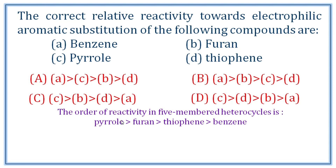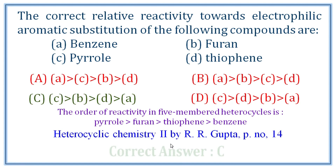The reason pyrrole is highly reactive is due to the electron density and the electron-donating ability of nitrogen — this is the trivalent nitrogen's electron-donating ability. Furan has a highly electronegative oxygen, reducing electron density, so electrophilic substitution is lower. Thiophene is the least reactive among the five-membered heterocycles because sulfur's p-orbital and carbon's p-orbital have a size difference, making overlapping less effective. Benzene comes last. Correct order is C, B, D, A. Correct answer: C.